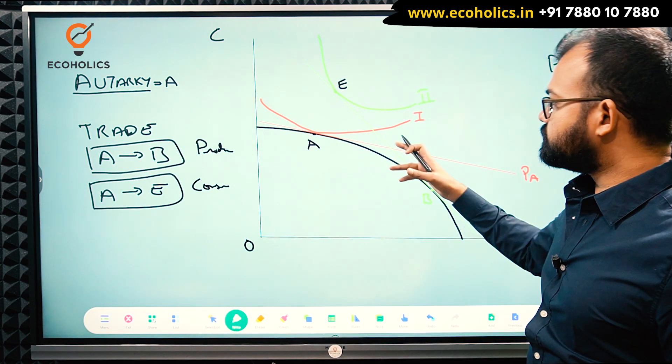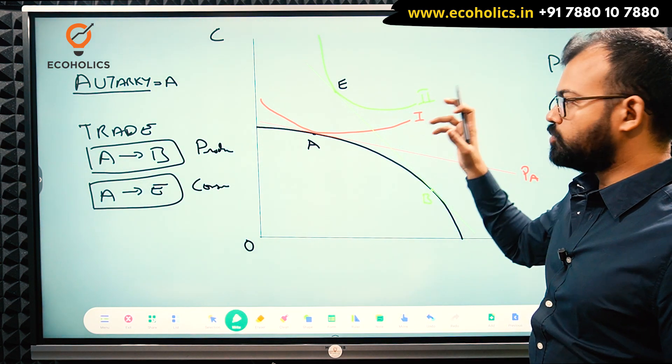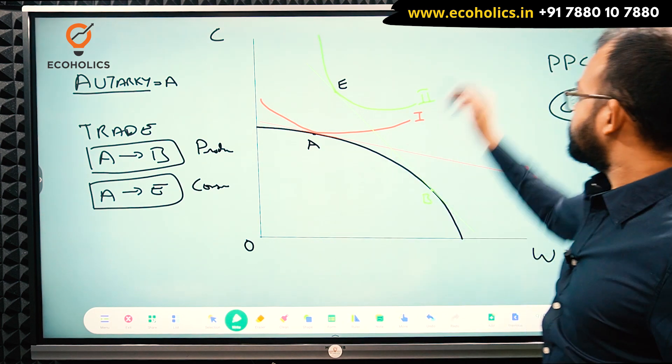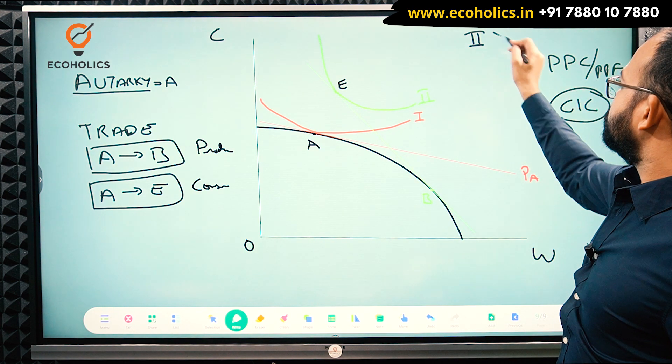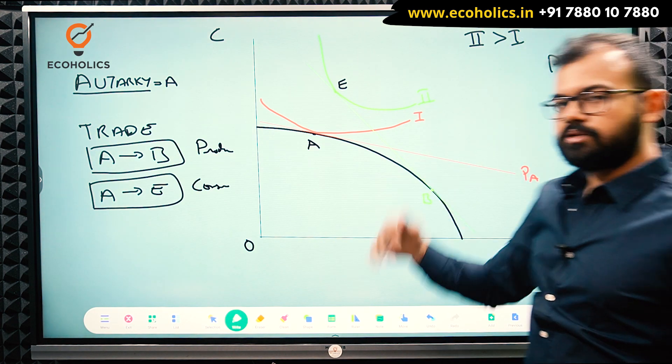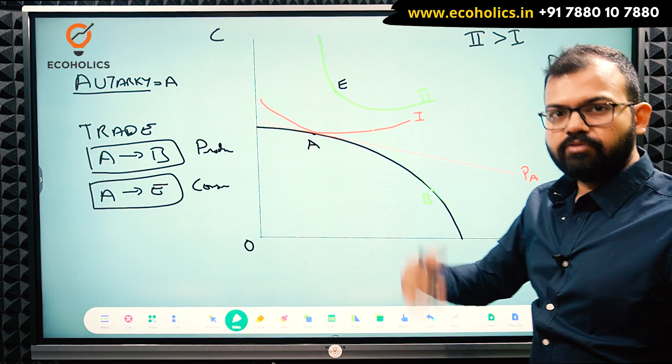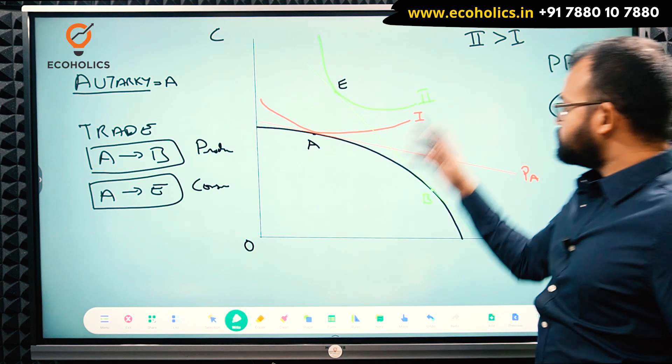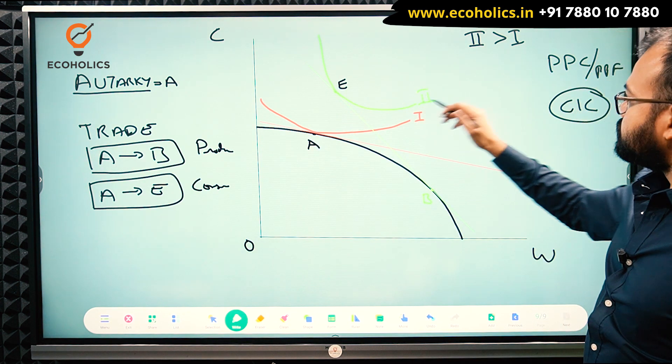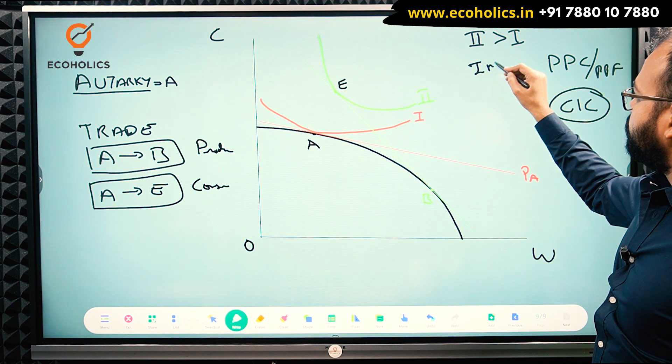But as soon as it engages in trade with United States of America, India has expertise in wheat, that is the horizontal axis, and moves from point A to point B. But in consumption, India moves from point A to point E. Why has this happened? Can we consume beyond PPC? The answer is yes. Which indifference curve is better, 1 or 2?